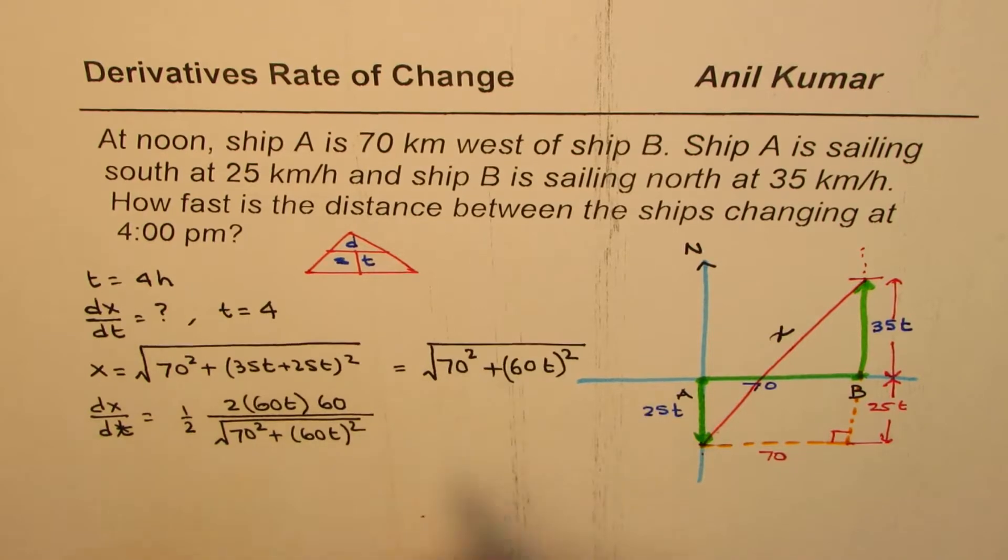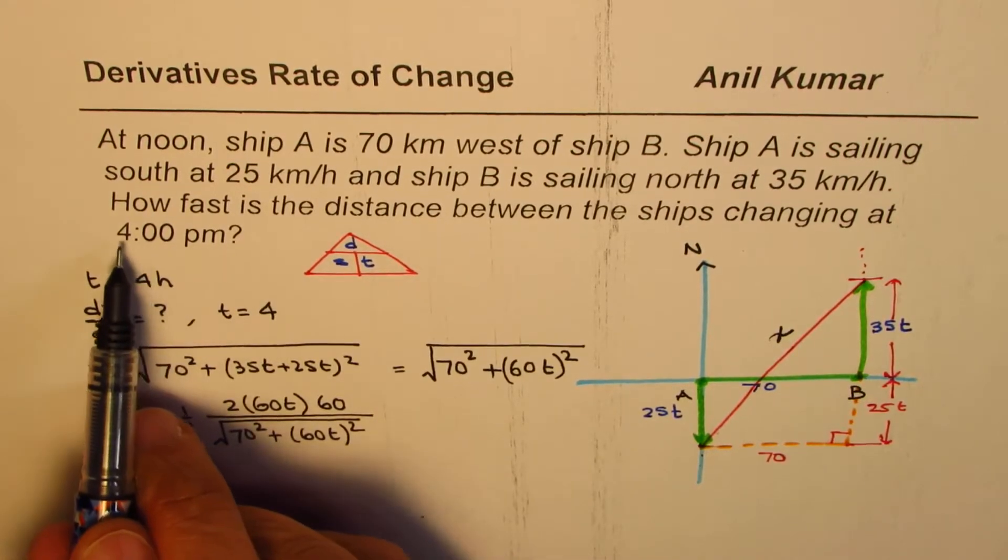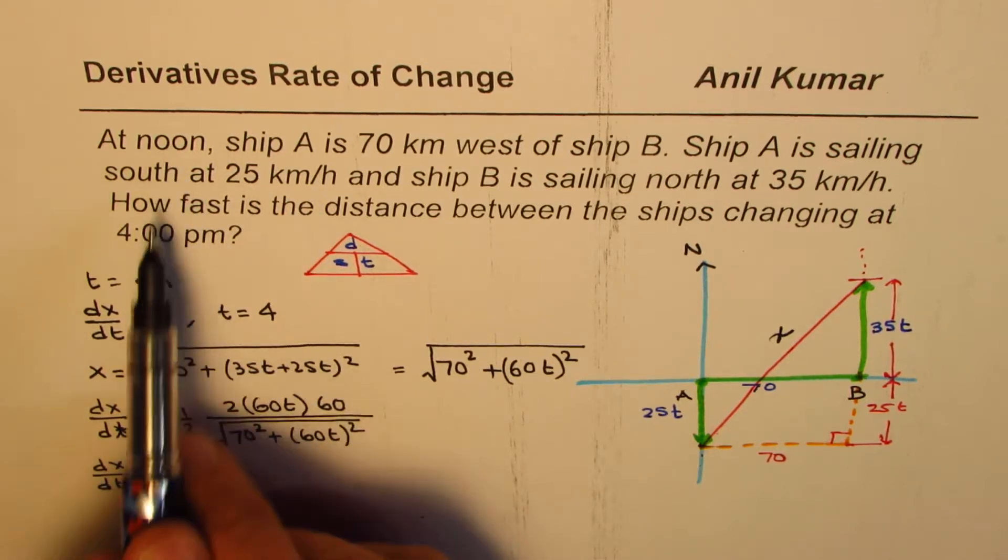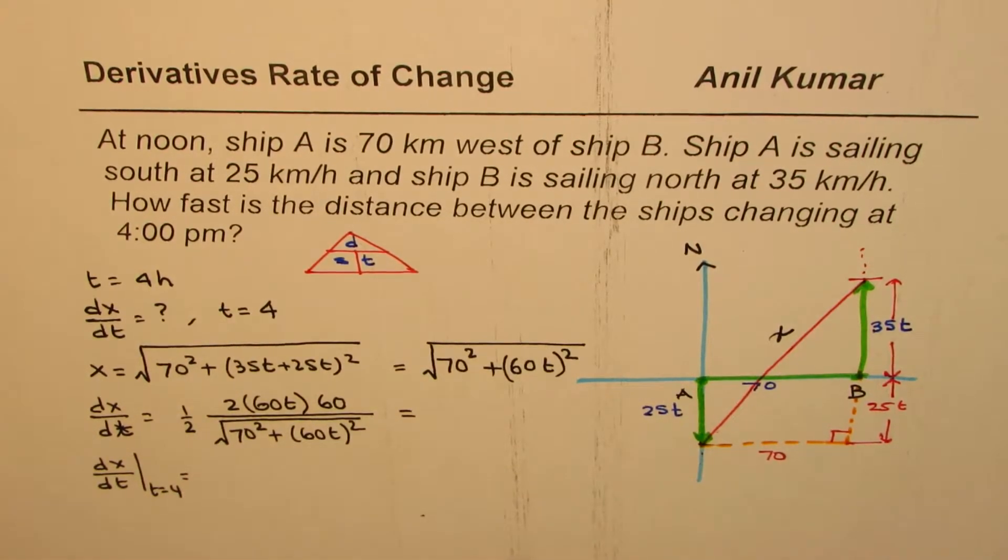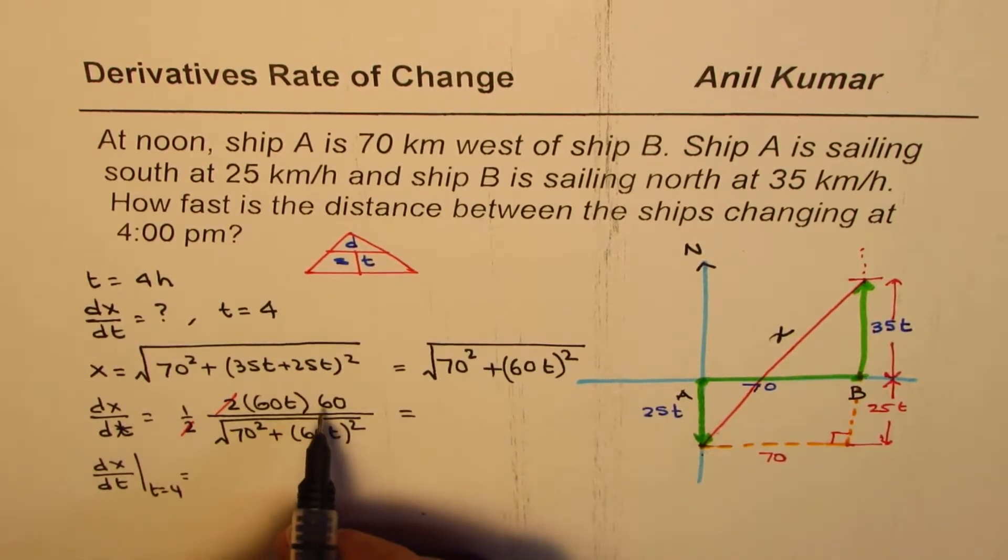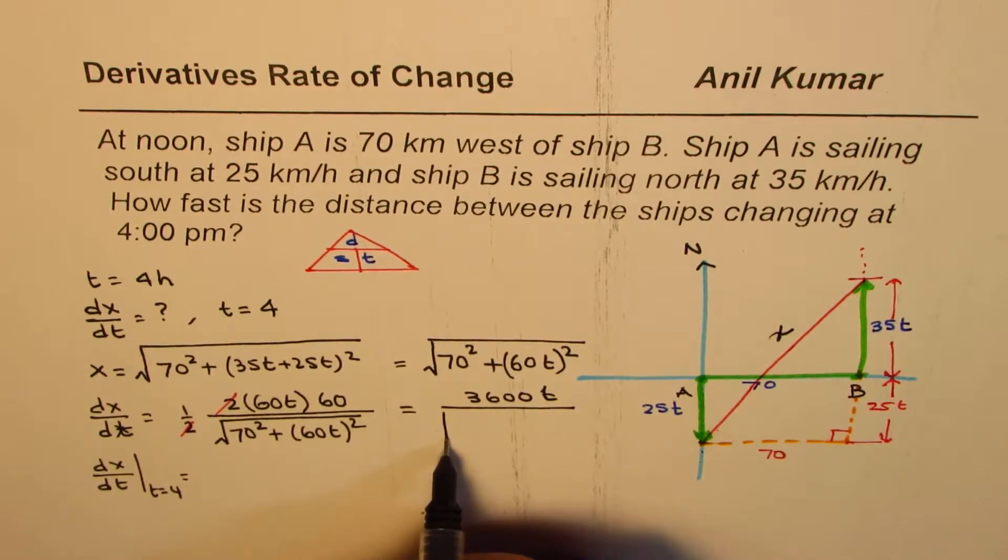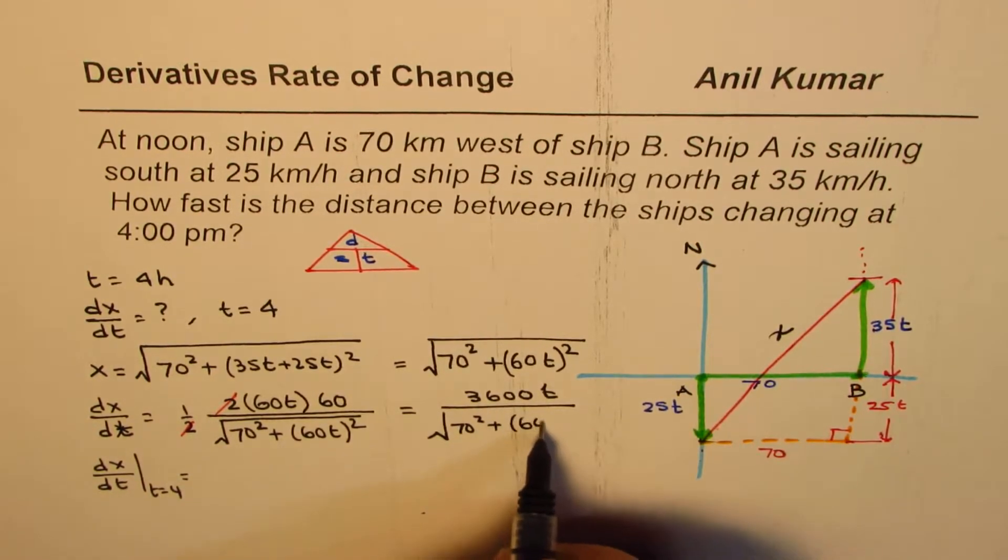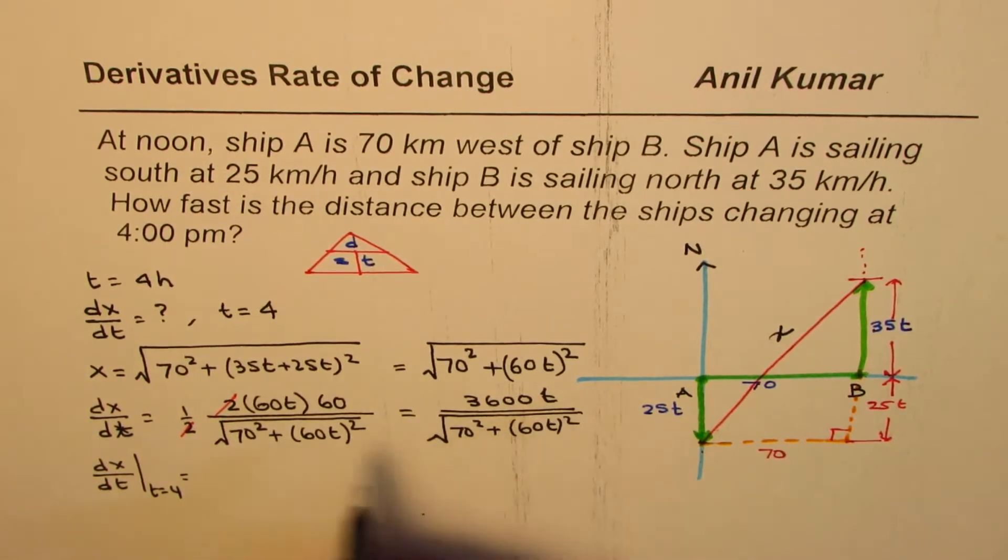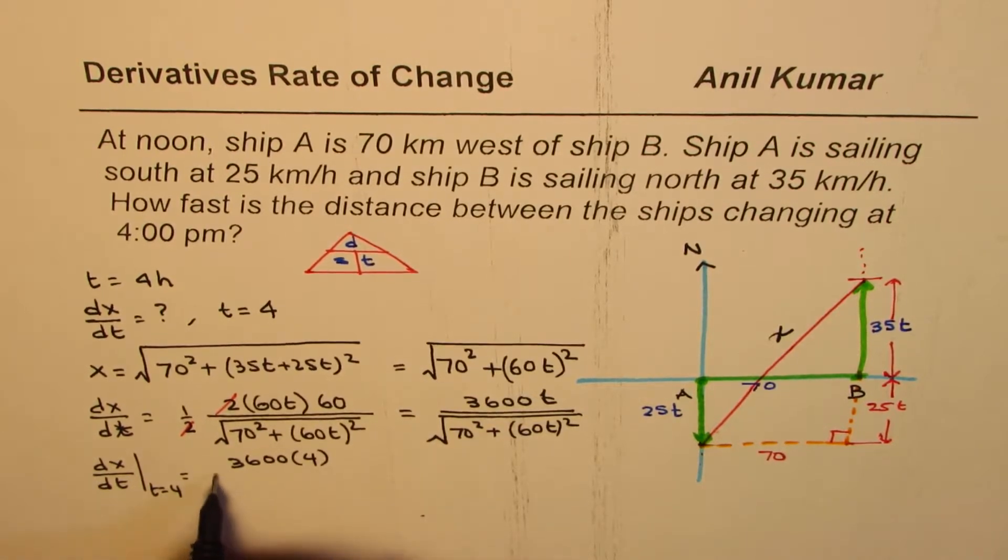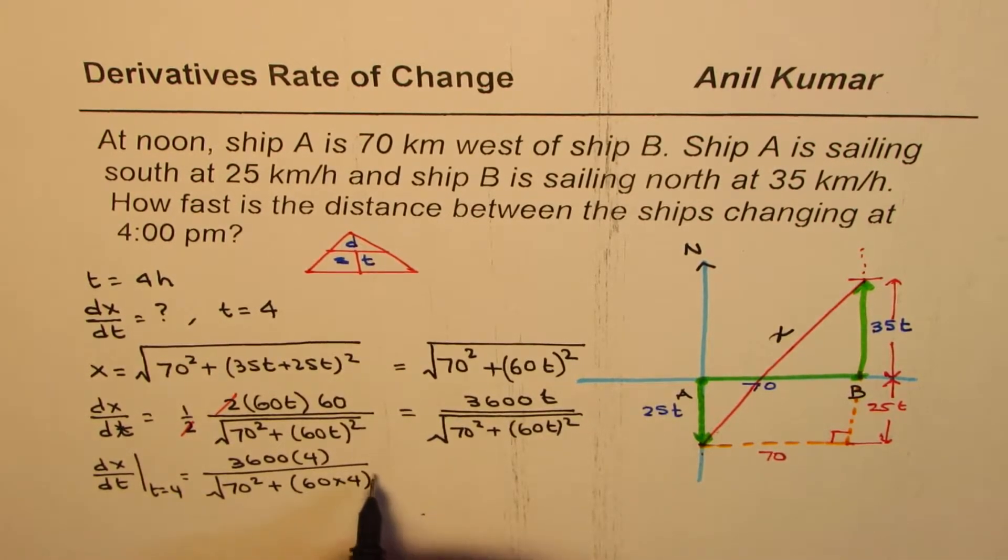Now, we need to find this rate of change at T equals to 4. We need to find dx/dt when T equals 4, because at 4 p.m., since the shift started at noon, the time will be 4 hours. So we can substitute that here. Before that, let me simplify this by canceling the 2. What we get here is 60 times 60 is 3600T divided by square root of 70 square plus 60T whole square. Now in this equation, I will substitute 4 and then calculate the answer. If I substitute 4 for T, I get 3600 times 4 in the numerator and the denominator will be 70 square plus 60 times 4 whole square square root.